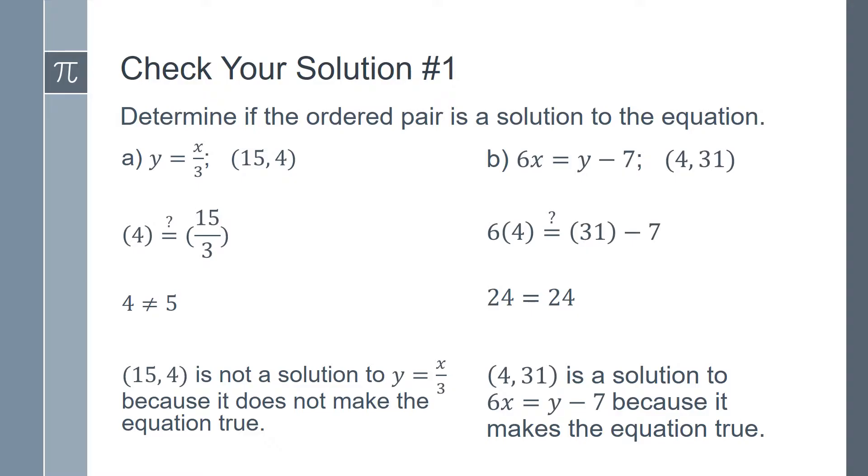Now let's take a look at part b. We'll substitute 4 in for x and 31 in for y. So on the left hand side we have 6 times 4, and on the right hand side we have 31 minus 7. In this case, 6 times 4 equals 24, and 31 minus 7 also equals 24.